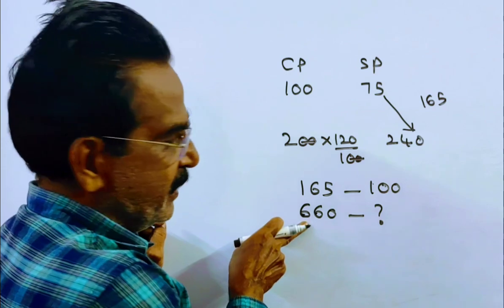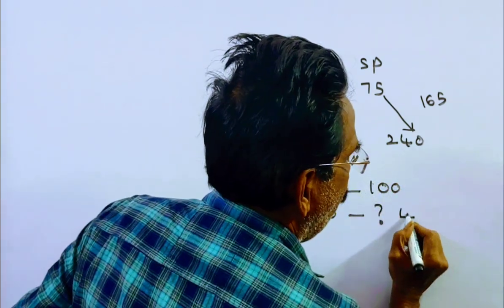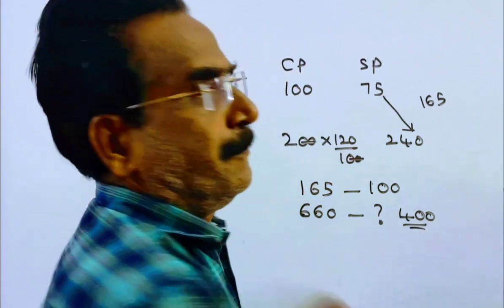Friends, the 660 is 4 times of this. So 4 times of 100. 400 is the cost price friends.